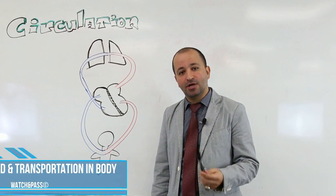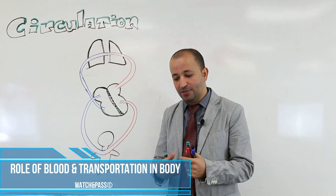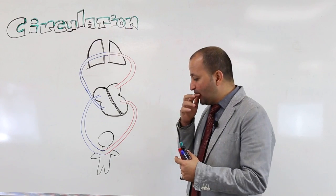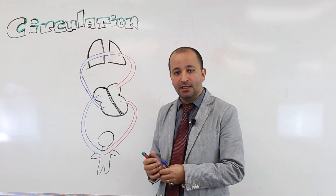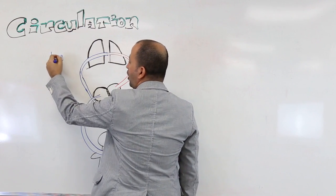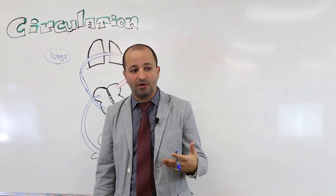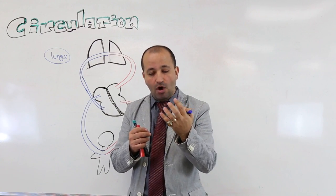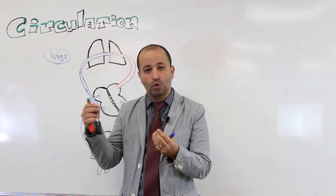To understand the cardiovascular system, you need to understand that there is a heart working as a pump, and then there is the lungs. There are two of them in the body. The job of the lung as the major structure of the respiratory system is to take oxygen into the blood and then get rid of CO2.